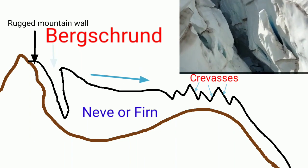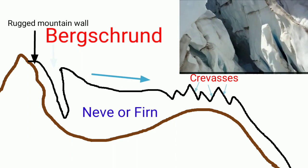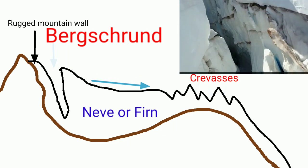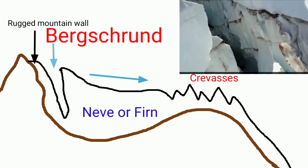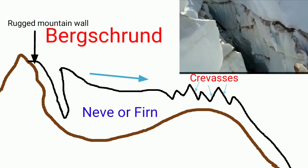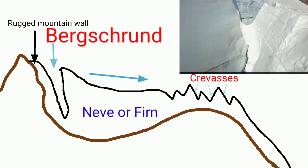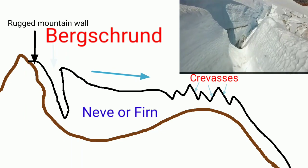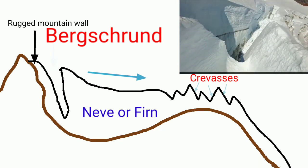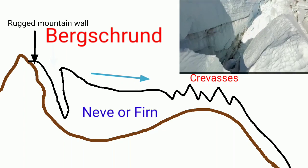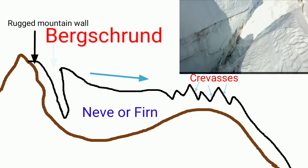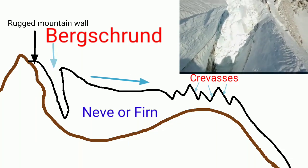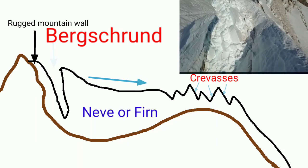We will see the crevasses. This is the same as the crevasses. We will also find true crevasses. The crevasses will be the first place of Bergschrund and the crevasses.